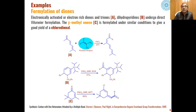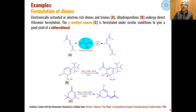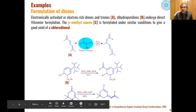The mechanism of this reaction with trienes is the same; the only difference is that this is not an aromatic system but an open-chain triene system. Similarly, dihydropyridines also undergo direct Vilsmeier formylation in the presence of DMF and POCl3 in dichloromethane as solvent, and formylation takes place at the specific position of the dihydropyridine.